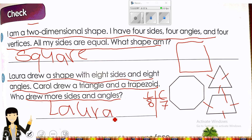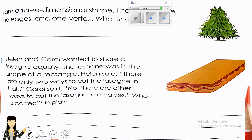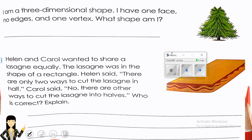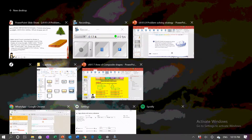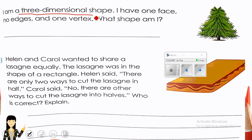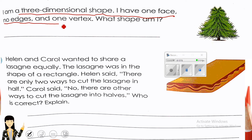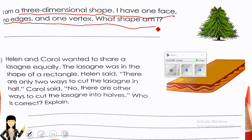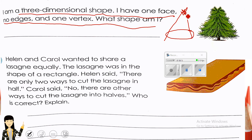Next: I am a three-dimensional shape. I have one face, no edges, and one vertex — or apex. What shape am I? It looks like a tree. Perfect — it's a cone. Some books call the point a vertex, others call it an apex or point.